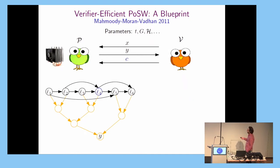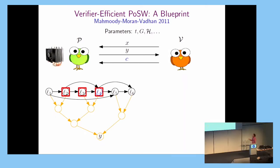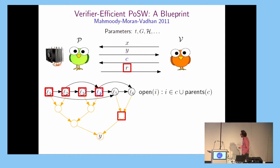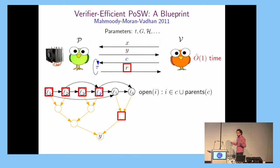The verifier then wants to confirm you did the right thing and quizzes you on some labels. You give the labels of the parents, the verifier checks correctness of the label, and you also provide the Merkle tree commitment of everything already opened. This is a small example — you're giving almost all of the graph here, but this is just for illustration. This can be verified quickly, and you repeat this many times until the verifier is convinced.